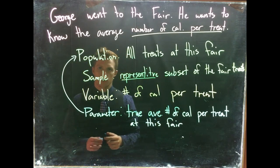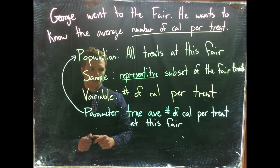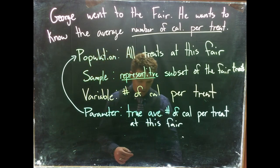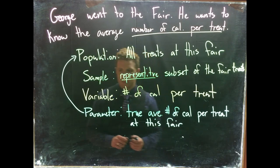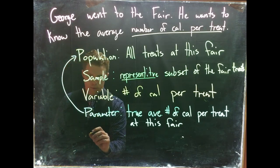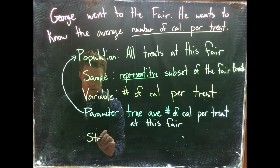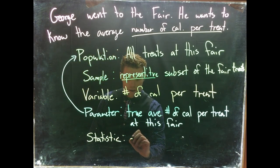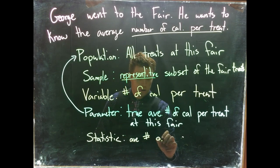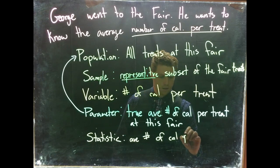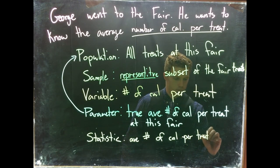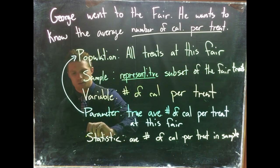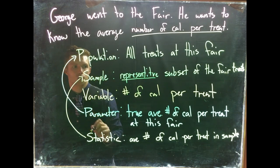But this would be really hard to do. George would have to go and sample every single treat at the fair — that would probably take too much time and too much money, and he would probably get way too fat if he ate that much. So what he can do is take a sample, and from the sample he can get a statistic.